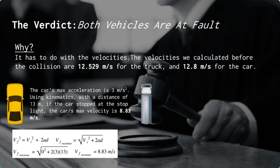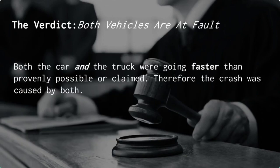For the truck, Ms. Schreiner claimed to have only been going 6.7 meters per second before the collision. This means that both the car and the truck were going faster than provenly possible through physics, the car's maximum velocity, or claimed. Therefore, the crash was caused by both vehicles.